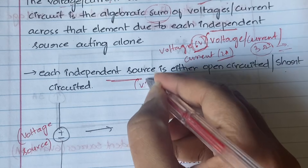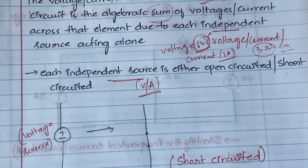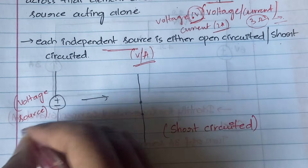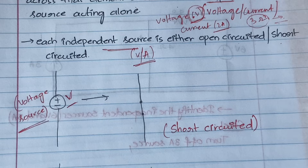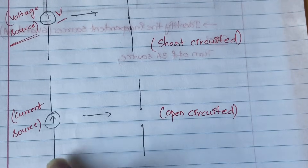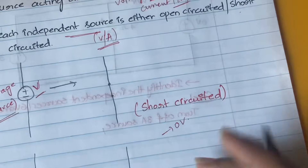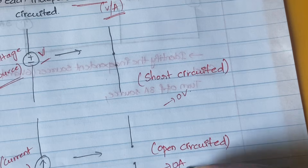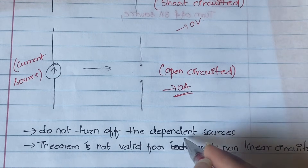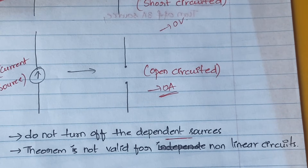Each independent source could be either a voltage source or a current source. Each independent source will either be open circuited or short circuited. When do you short circuit and when do you open circuit? If it is a voltage source, you will short circuit it — that means replacing it with zero volts. If it is a current source, you will open circuit it — replacing it with zero amperes. Do not touch the dependent sources; leave them as they are. Also, this theorem is valid only for linear circuits, not non-linear circuits.